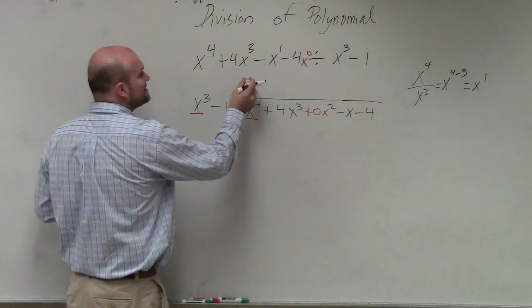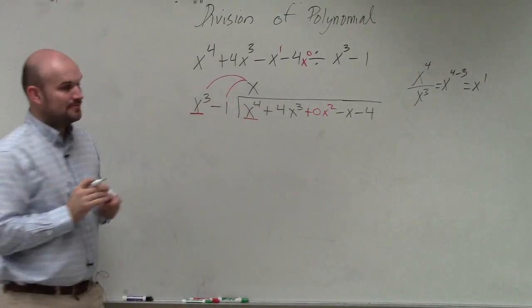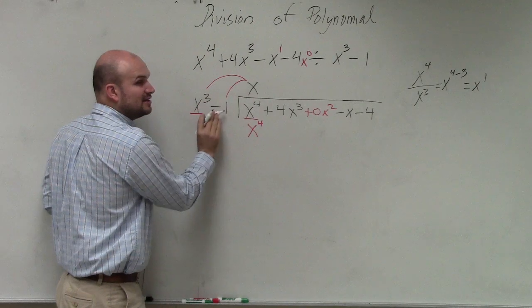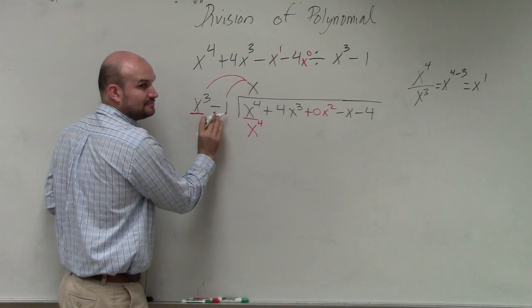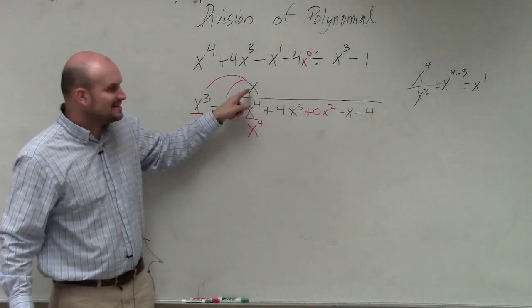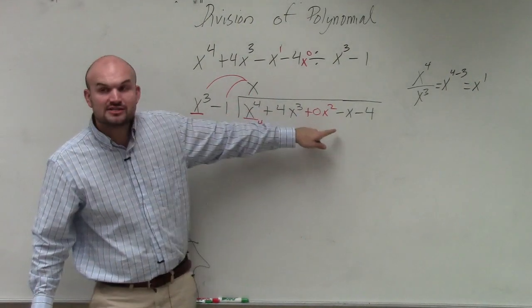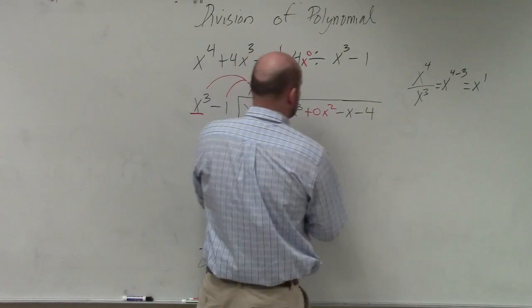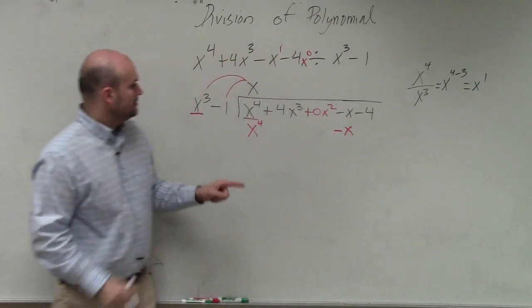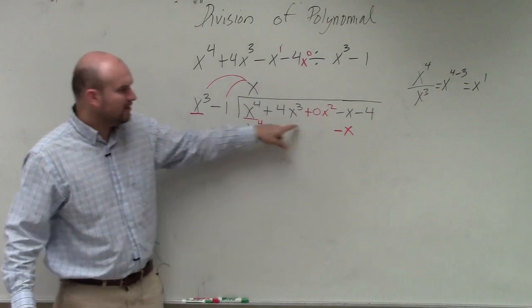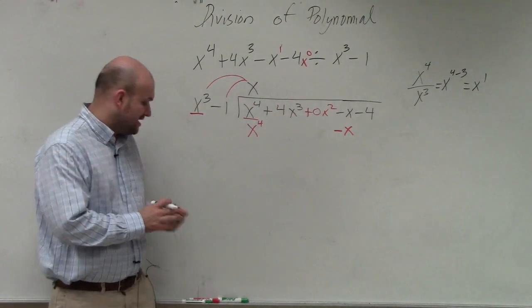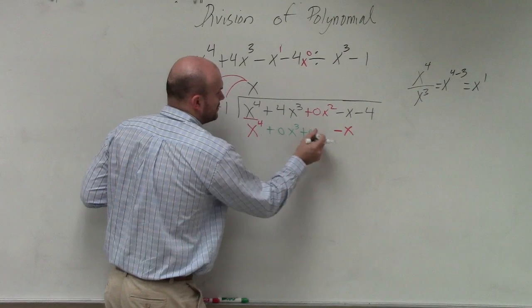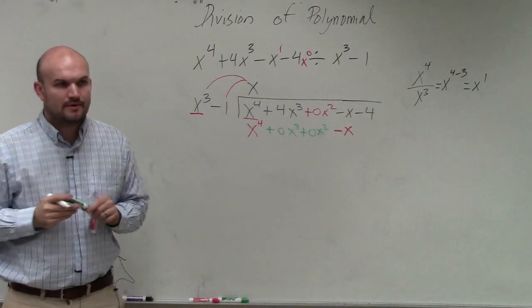So now we need to multiply this number times our first term and our last term. x times x cubed is x to the fourth power. x times negative 1 is negative x. However, I can't subtract a negative x from x cubed, nor can I subtract from an x squared. I can only subtract an x to the first power from an x to the first power. So I'm going to write that over here. So x times negative 1 is negative x. So then what do I put here? Well, I can use space values again. You don't have to put the space values, but I recommend it.